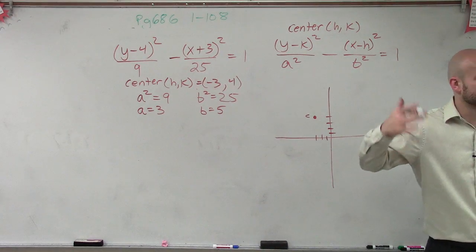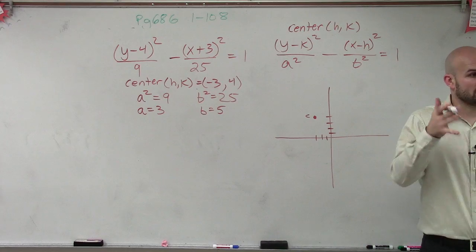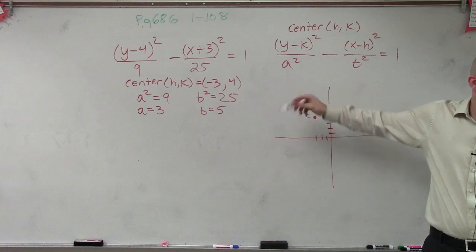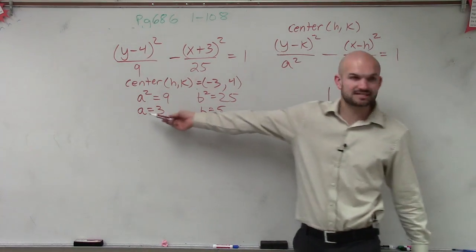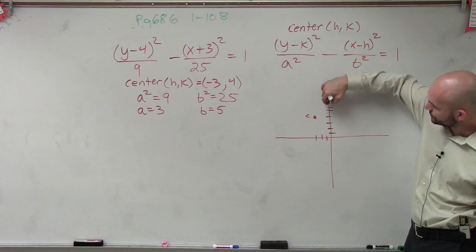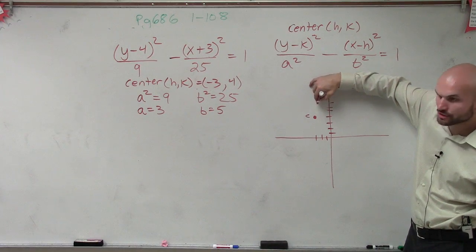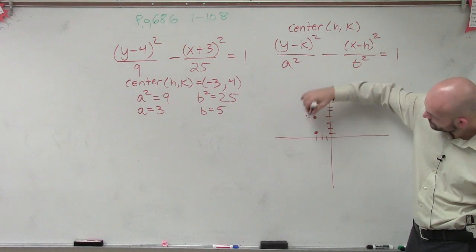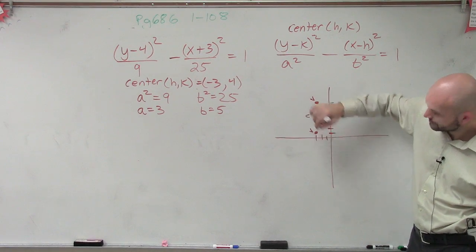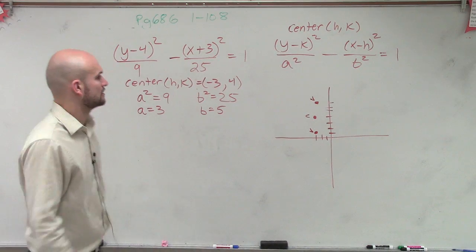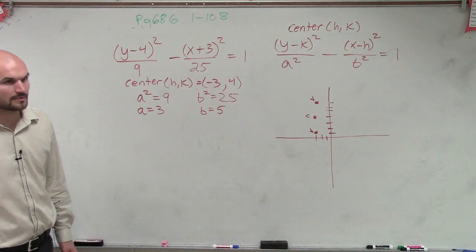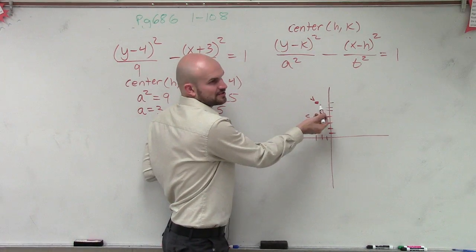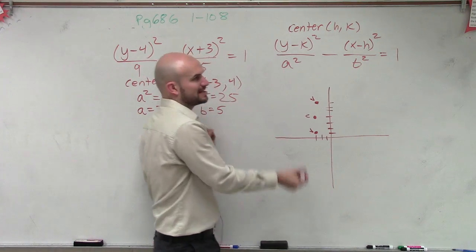Now we know our a. Now, ladies and gentlemen, we set, we determine, is this going to be horizontal or vertical? Vertical. So my vertices, are they going to be above and below my center, or to the left and right? Above and below. So we know my a is 3, so I'm just going to go up 3 units. 1, 2, 3. And then I need to go down 3 units. 1, 2, 3. Does that make sense? Those are my two vertices.